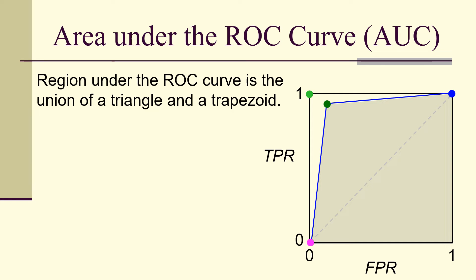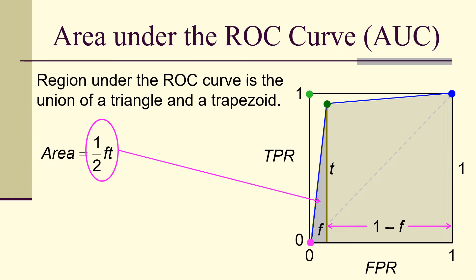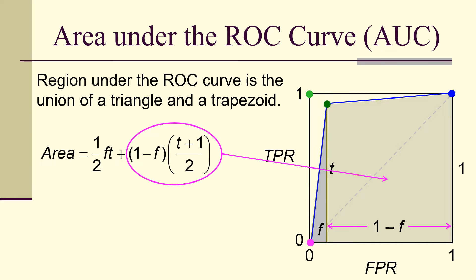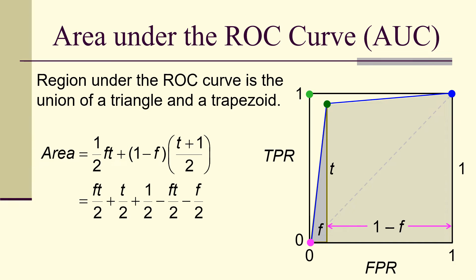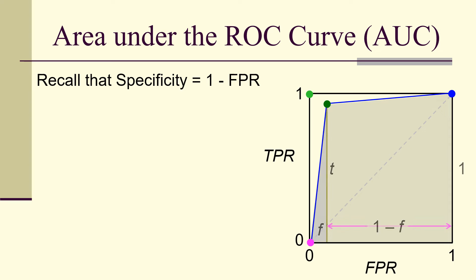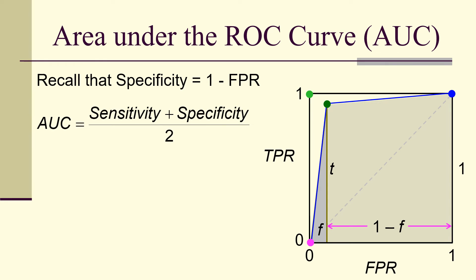The region under the ROC curve is the union of a triangle and a trapezoid. The area of the triangle is (1/2) * f * t, and the area of the trapezoid is (1 - f) * (t + 1) / 2. This simplifies to t/2 + (1 - f)/2. Recalling that specificity is (1 - false positive rate), the area under the curve equals (sensitivity + specificity) / 2 — it is simply the average of the two.